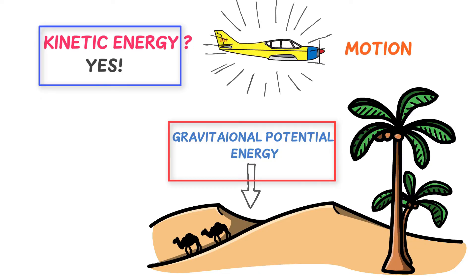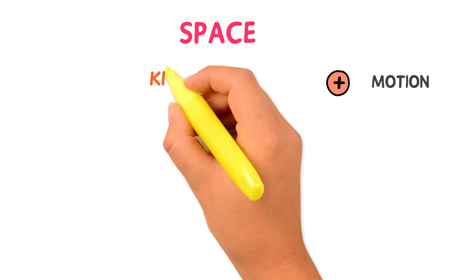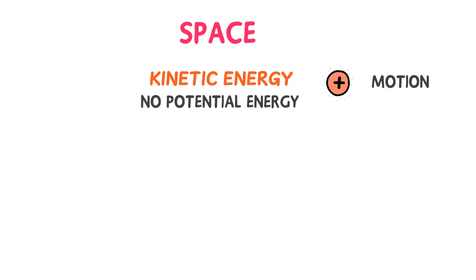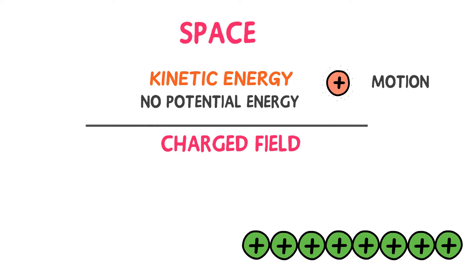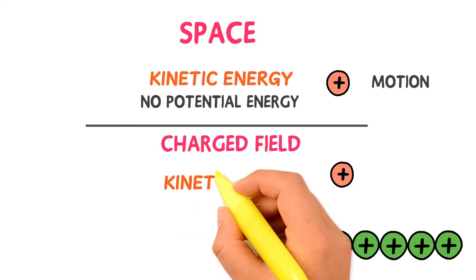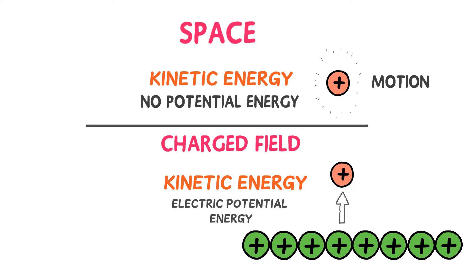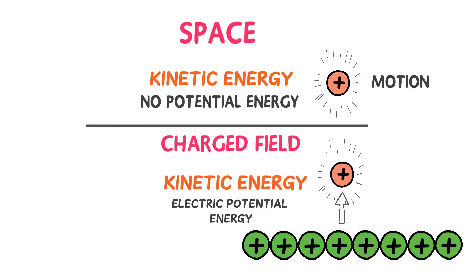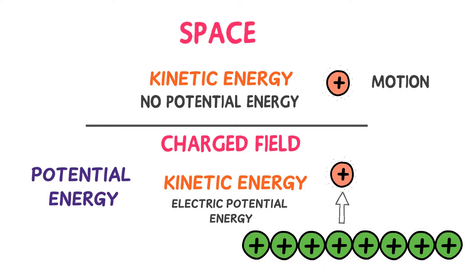Consider a single moving charge in space. Since it is in motion, it possesses kinetic energy, but no potential energy. Now consider the same charge in an electric field — it possesses both kinetic energy and electric potential energy, because its motion is affected by the electric force. Thus, a moving body possesses kinetic energy, but its potential energy purely depends upon its system or surroundings.